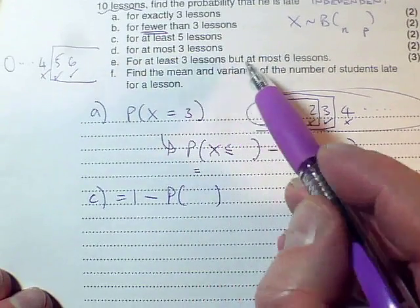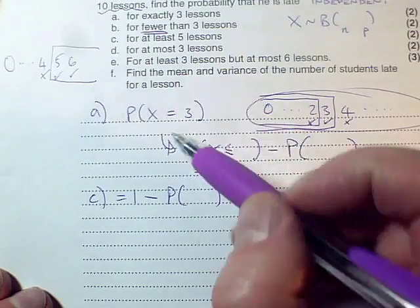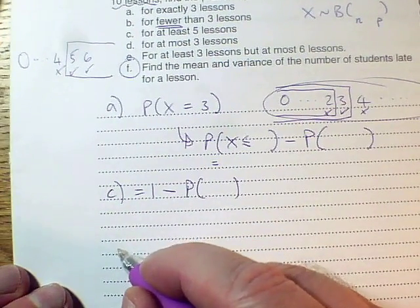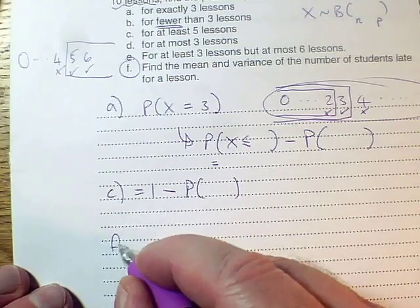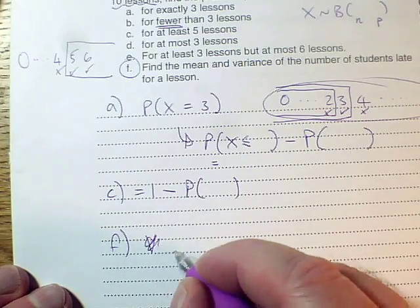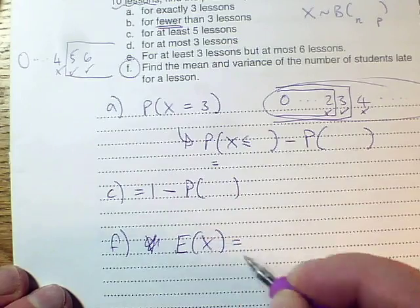All of these, the others, are just variations on that theme until you get to part F, where they want you to find the mean and the variance. So you have formulas for the expectation, in other words the mean, of a binomial.